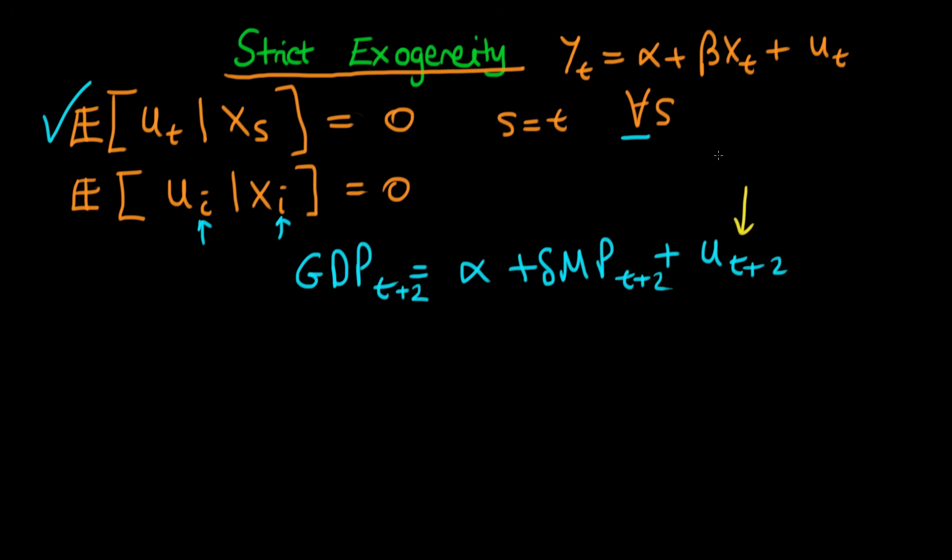This error term ut+2 would actually contain some effect, let's call it beta times monetary policy at time t. Because this error term contains monetary policy at time t, we have correlation between monetary policy at time t and the error at time t+2. Because of that, delta hat least squares will be biased.